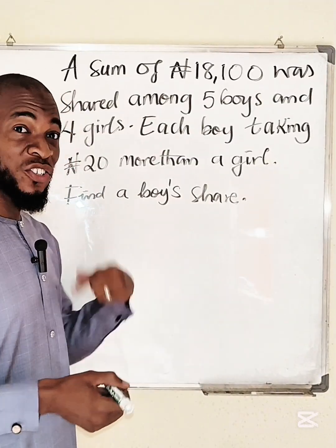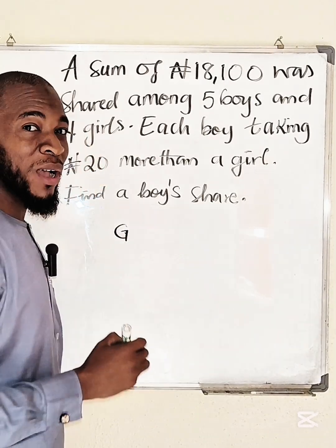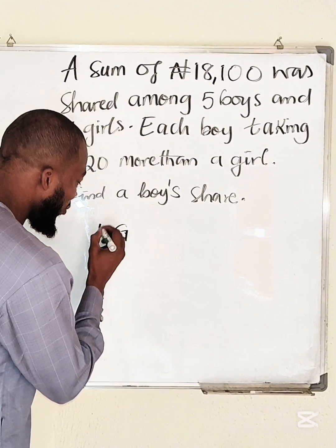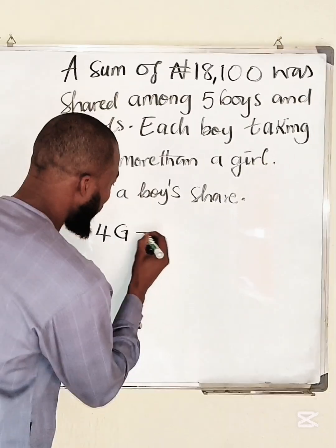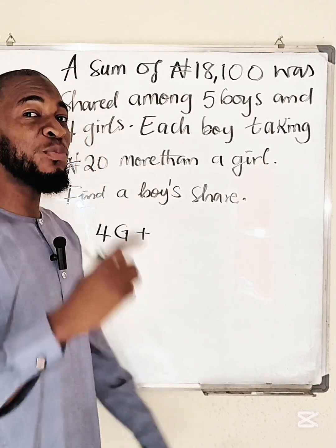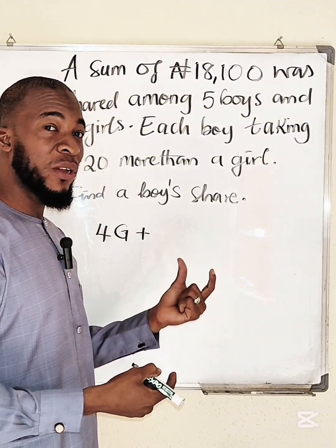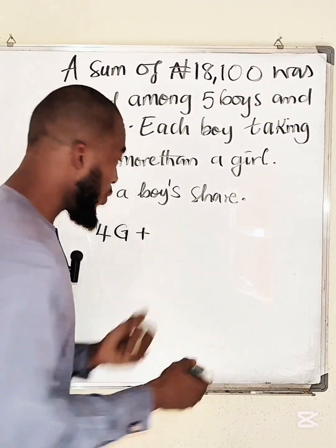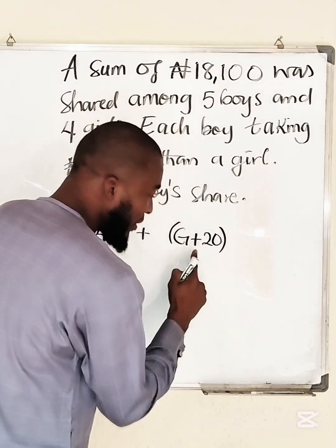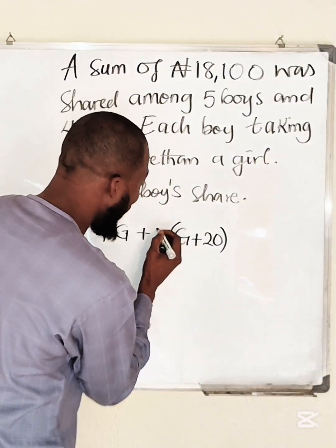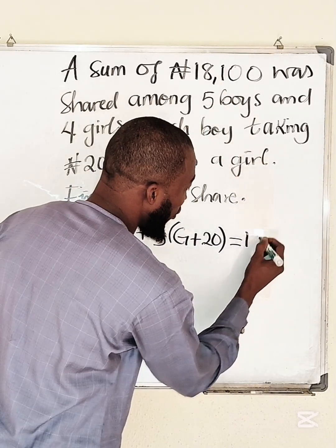Let each girl's share be g. There are four girls, so multiplying by four gives the total share of the four girls. Since each boy takes ₦20 more than a girl, adding 20 to g gives the share of each boy: g plus 20. There are five boys, so multiplying by five, the total will be ₦1800.